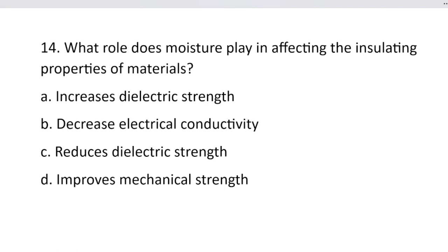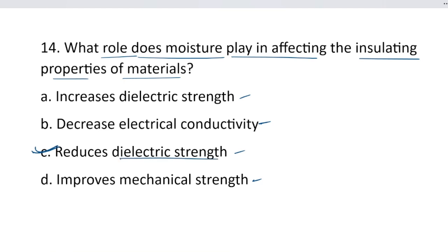Question number 14. What role does moisture play in affecting the insulating properties of material? Option A, increases dielectric strength. Option B, decreases electrical conductivity. Option C, reduces dielectric strength. Option D, improves mechanical strength. The correct answer is option C, reduces dielectric strength — because moisture means water particles, and water particles are conducting material, which reduces overall dielectric strength.